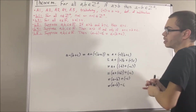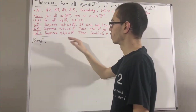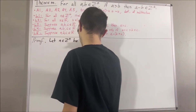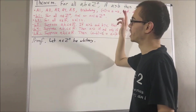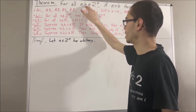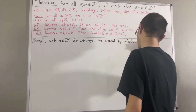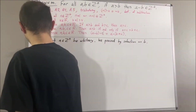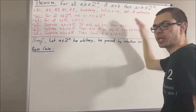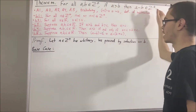Okay, so now let's get into proving this theorem. To start out the proof, let's first give ourselves an arbitrary positive integer a. And from here, we're going to proceed by induction on b. So, by induction, we're going to prove for all positive integers b: if a is greater than b, then a minus b is a positive integer. So, let's start with the base case. In the base case, we're trying to show that this is true in the case where b is equal to 1. So, really, we're trying to prove: if a is greater than 1, then a minus 1 is a positive integer.